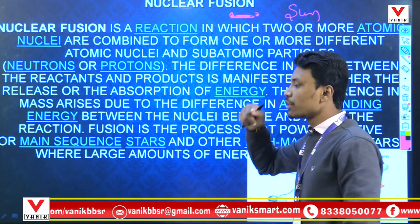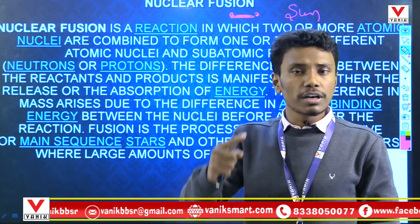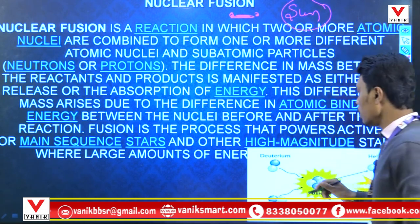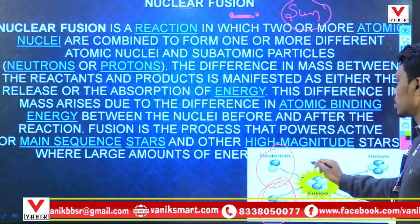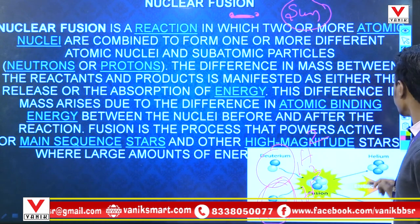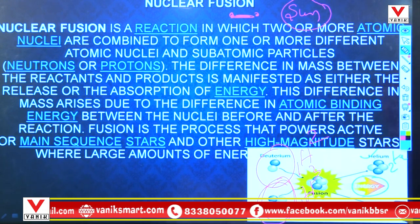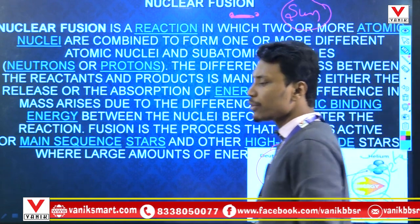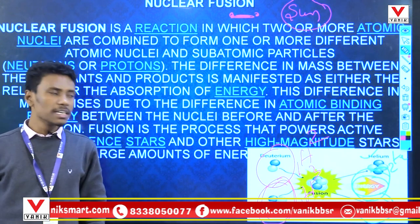Nuclear fusion produces about 100 times more energy than nuclear fission. In nuclear fusion, the chemicals used are deuterium and tritium — isotopes of hydrogen. Deuterium has the formula H-2 (¹H²) and tritium has the formula H-3 (¹H³). They fuse to produce helium-4 (₂He⁴) and a neutron, releasing enormous energy. This energy released by nuclear fusion is called thermonuclear energy.